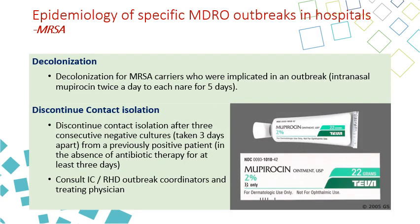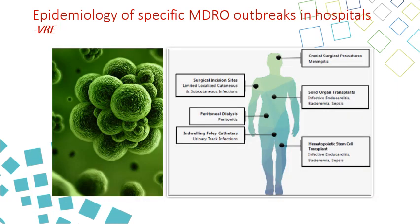Decolonization of MRSA is done by intranasal antimicrobial called mupirocin, twice a day for five days. Contact isolation for a patient who had MRSA is usually discontinued after three consecutive negative cultures taken three days apart. You need to consult the infection control and ICR-HD outbreak coordinators before doing that. The next MDRO we will talk about is VRE.